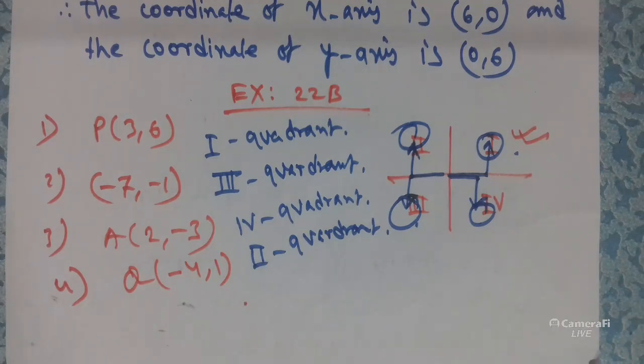Similarly, Question 2 asks about the point (-7, -1). When both values are negative, x moves left and y moves down, so the point lies in the Third Quadrant. The answer is the Third Quadrant.